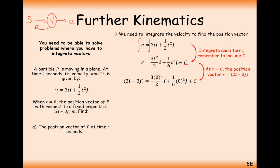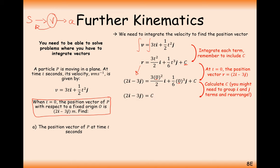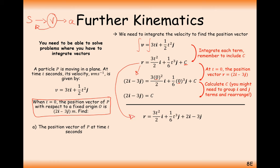To work out the c value, plug in t equals 0 and use the given initial condition. At t equals 0, the position is 2i minus 3j. So 2i minus 3j goes on the left-hand side, and t equals 0 in each bracket. Simplifying, c comes out to be 2i minus 3j — a vector. Writing the full answer with this c value gives our final expression before rearranging.